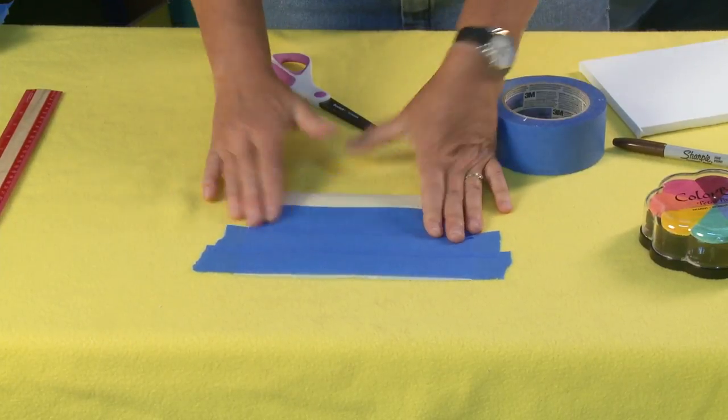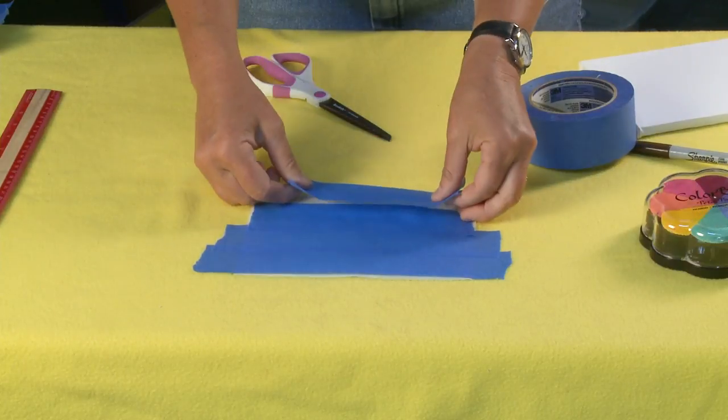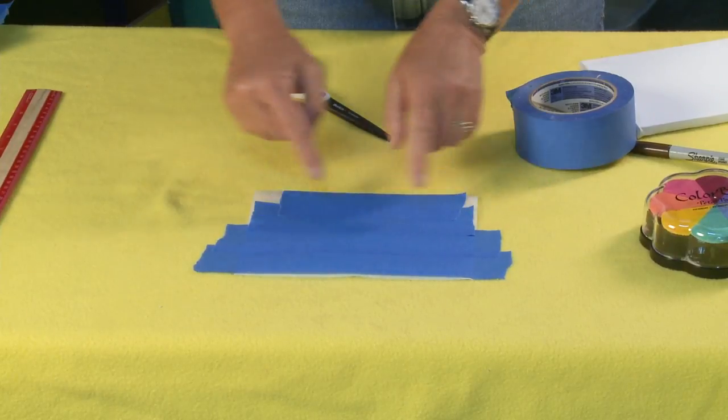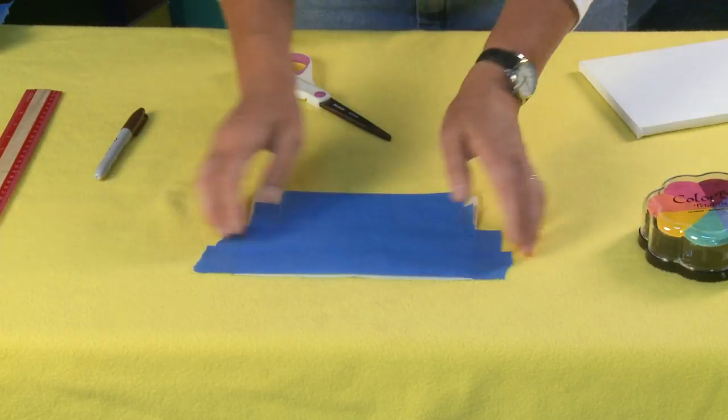So I've got my overlap there and then I've got one last piece here at the bottom. If it doesn't go all the way to the edge that's okay because we're not going to cover the entire piece.